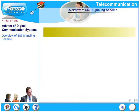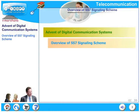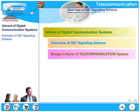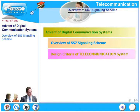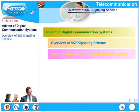In this chapter we will talk about the advent of digital communication systems. First we will look at an overview of the SS7 signaling scheme. Next we will move on to design criteria of a typical telecommunication system. We will follow it up with the evolution of switching systems — space switching, electronic switching, message switching, circuit switching, and packet switching. We will round it off with a brief overview of ISDN.